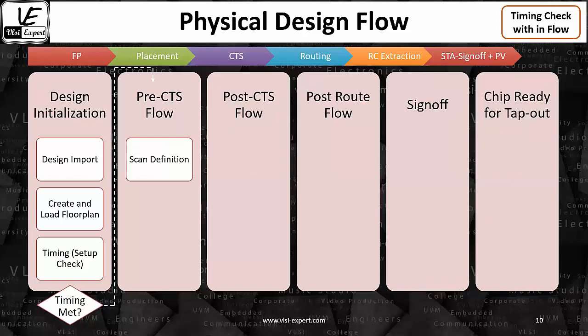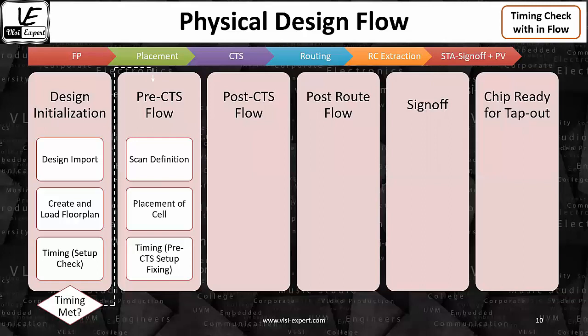In a pre-CTS flow, there is scan definition and placement of cells — the standard cell placement we already talked about. We do it here. Then again we do the timing check. Now we have macros and standard cells, and everything is connected with each other.